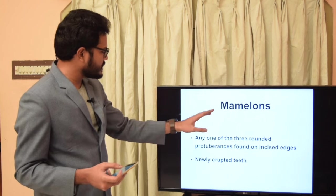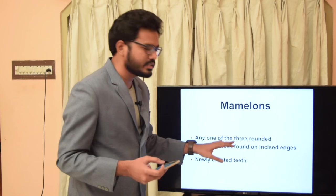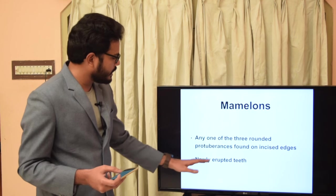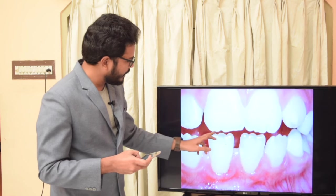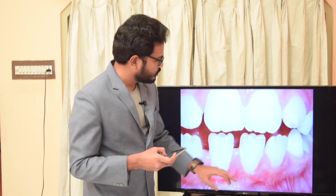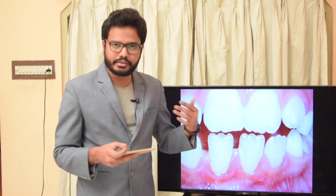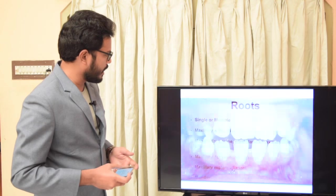Mamelons are any one of the three rounded protuberances found on the incisal edge of newly erupted teeth. In the clinical image you can clearly notice three mamelons, each representing one particular lobe. Usually these mamelons get attrited with time and the incisal edge becomes more or less flatter.